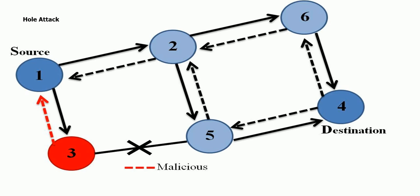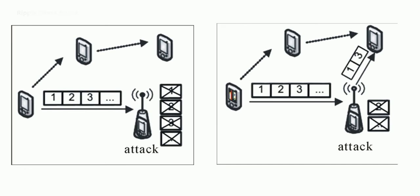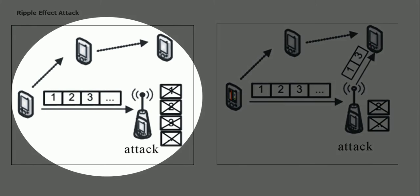The grey hole attack is defined as one in which the malicious node selectively drops packets. For instance, a malicious node decides to target particular nodes A and B, and then all the packets coming from nodes A and B within the ad hoc secondary network in the context of cognitive radio are dropped by this malicious node.